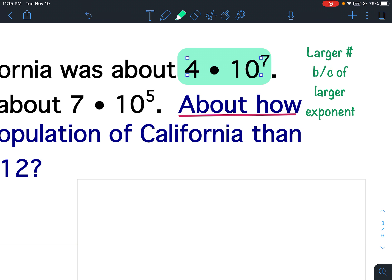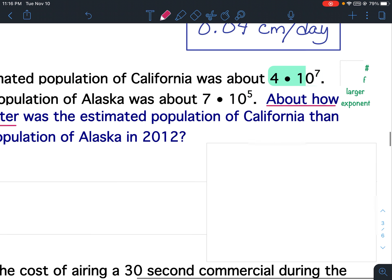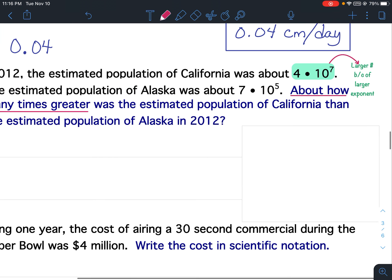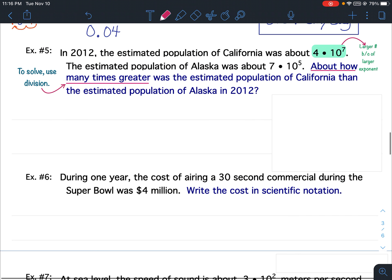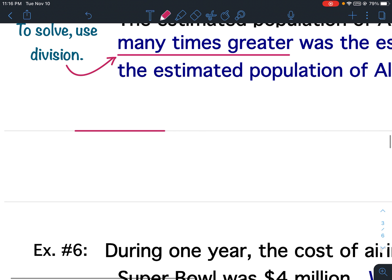So go ahead and circle that, what I just highlighted. And the reason why that's the larger number is because it has the larger exponent. So pause your video and get that written down. Okay, so what I'm going to do is I'm going to take 4 times 10 to the 7th and divide it by the smaller number of 7 times 10 to the 5th.